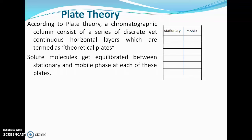For plate theory, we consider the right side of the column as stationary phase and the left side as mobile phase. The stationary phase is fixed while the mobile phase moves down the column. When we inject 100 solute molecules into the column, they get equilibrated in the first plate — 50 molecules enter the stationary phase and 50 remain in the mobile phase. This is known as equilibration.